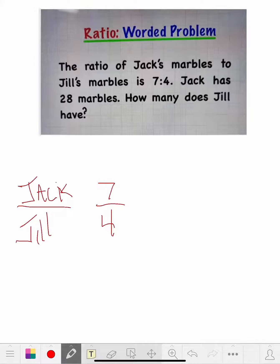So now they're telling you that Jack, that equals 28 over, I don't know how many Jill has. So we're going to write X for Jill.